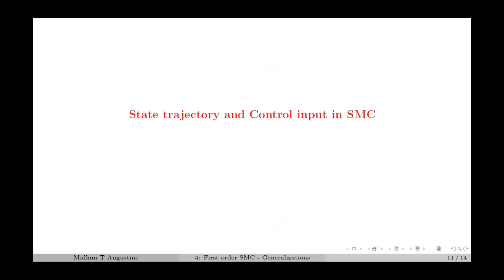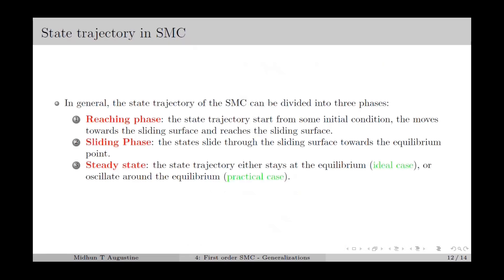Next, we discuss the state trajectory and control input in the case of first-order SMC. The state trajectory can be divided into three phases: the reaching phase, in which the trajectory starts from some initial condition and moves towards the sliding surface; the sliding phase, in which the states slide through the sliding surface towards the equilibrium point; and the steady-state phase, in which the trajectory either stays at the equilibrium (ideal case) or oscillates around it (practical case).